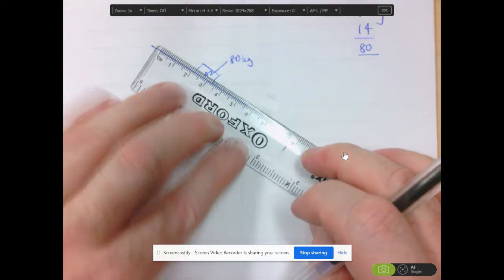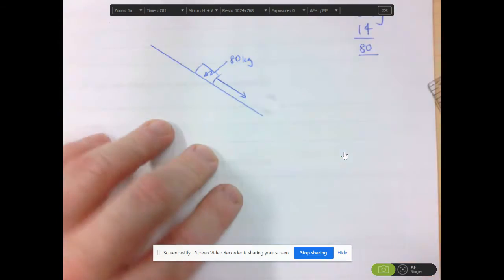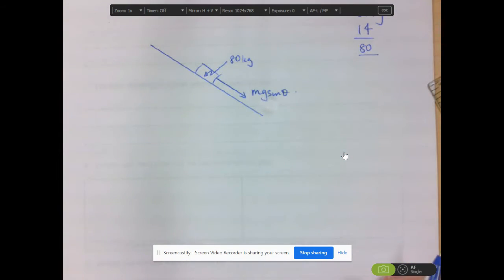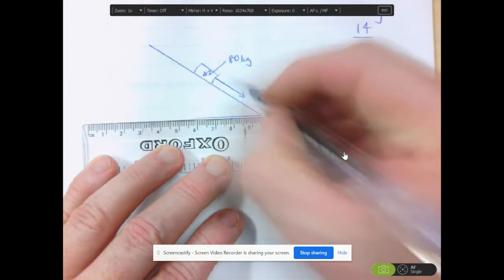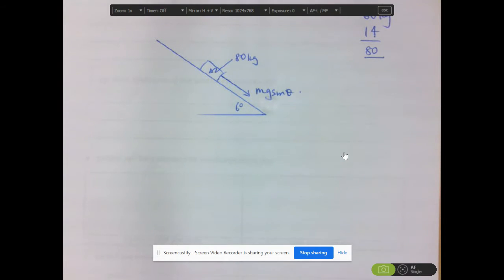And we know that going down the plane, that component of the weight force is mg sine theta, which we'll need in a few more moments. The plane is at an angle of 6 degrees. Obviously, this is not to scale, it's much more than 6 degrees.